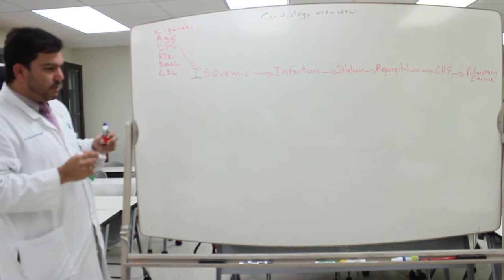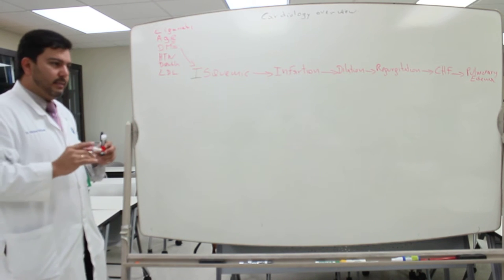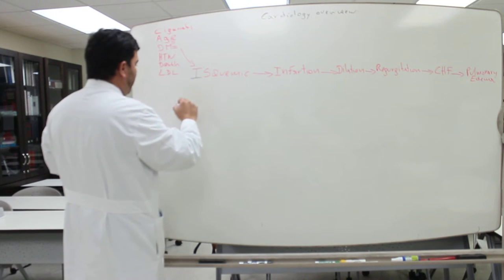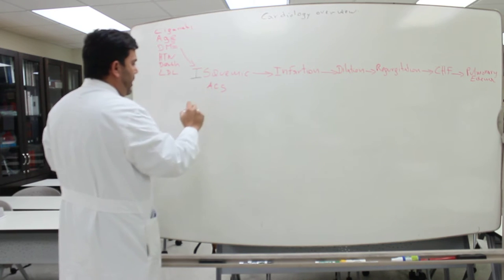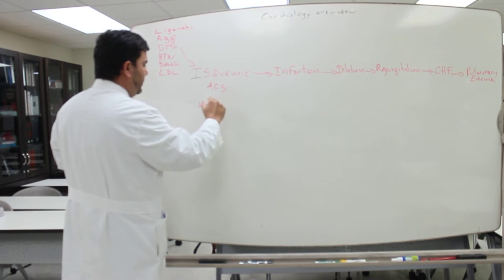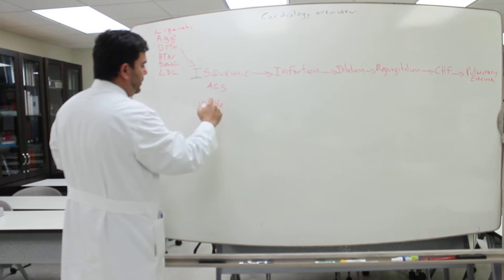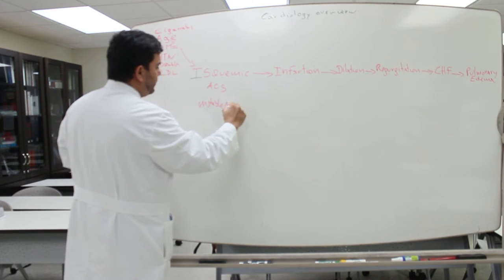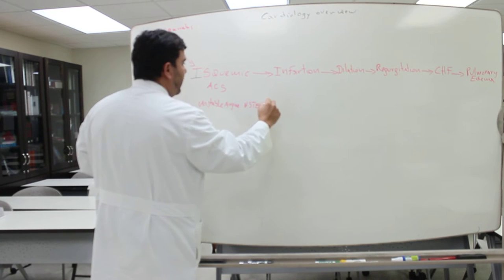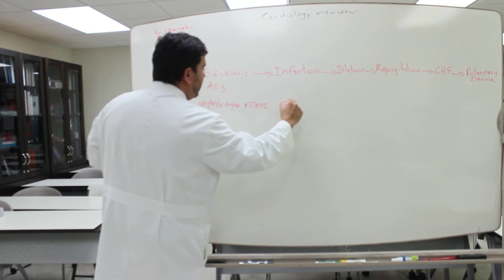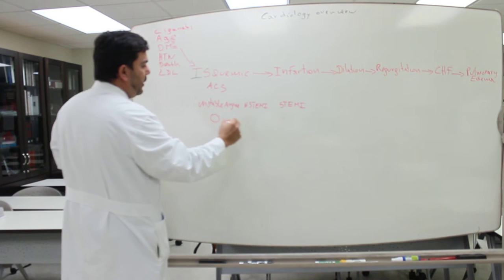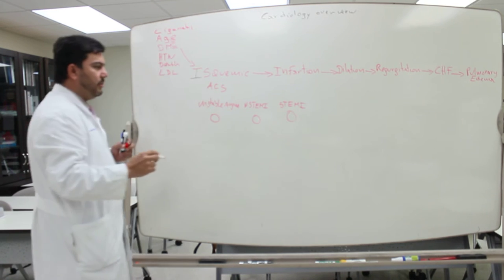Ischemia is sometimes divided as acute coronary syndrome. Acute coronary syndrome has three different parts: unstable angina, non-ST elevation MI, and ST elevation myocardial infarction. What you see here is the artery getting obstructed.